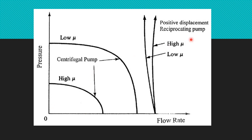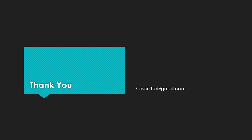Centrifugal pumps need priming whereas reciprocating pumps do not. The efficiency of centrifugal pumps is less compared to reciprocating. Centrifugal pumps can handle dirty water and all types of fluids, whereas reciprocating pumps cannot handle dirty or viscous fluids, and they produce more noise. This is the pressure and flow rate curve of a centrifugal pump and a positive displacement pump: in centrifugal pumps, as flow rate increases the pressure decreases, whereas in positive displacement pumps the flow rate remains constant regardless of pressure.